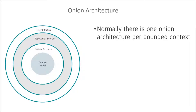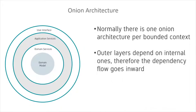Typically, there is one Onion architecture per bounded context. The concept of Onion architecture is that the center is key, so outer layers depend on internal ones. The dependency flow goes inward. As you can see, the domain model is coupled only with itself — it is purely independent, but it directs the behavior of all its outer layers.